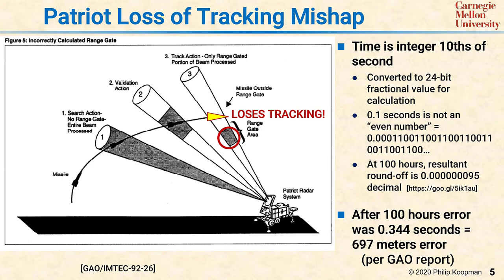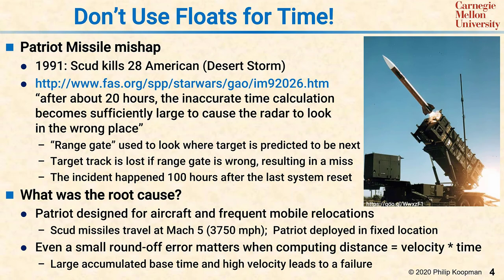Going back to the previous slide — what was the root cause of this? Really, it boils down to using floating point for time. But the back story is the Patriot missile system was never designed for intercepting ballistic missiles. Instead, it was designed for intercepting high-speed aircraft during the Cold War against the Soviet Union. SCUD missiles travel faster than aircraft, and it was assumed that the Patriot would be relocated frequently and would never sit in one place and run for 100 hours while actively monitoring for incoming aircraft.